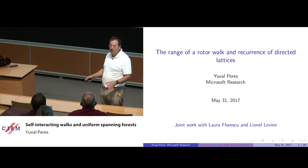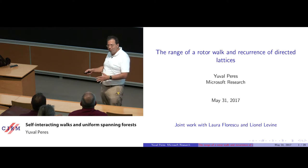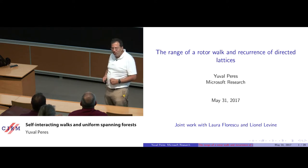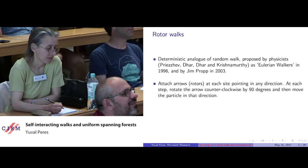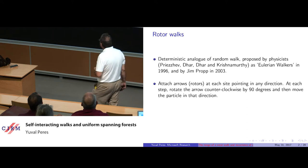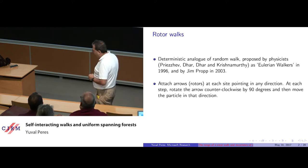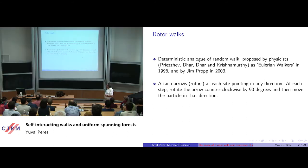Everything we can prove is quite easy, so it's published in the Mathematical Monthly, but if you solve the problems you will publish them in a more serious journal. We're talking about rotor walk, which is a deterministic analog of random walk, first proposed by Priezzhev et al. under a different name, and this name was given by Jim Propp in 2003.